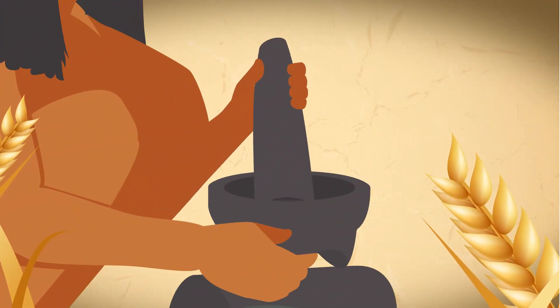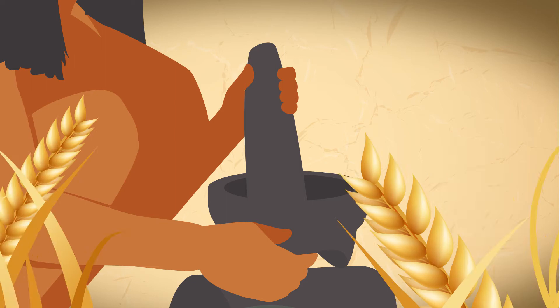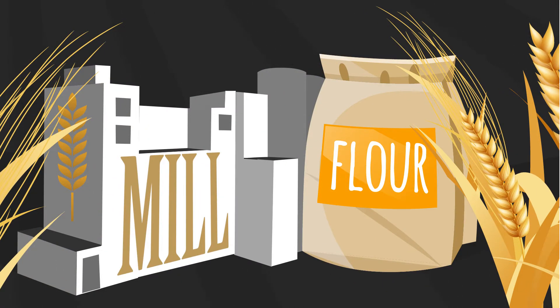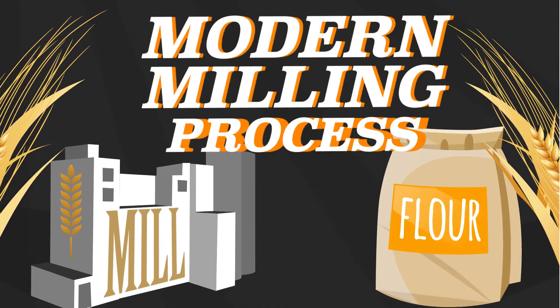For thousands of years, we have been grinding wheat kernels down in order to make flour. These days, it's performed on a much larger scale, thanks to the modern milling process.